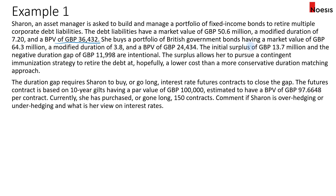There is an initial surplus of £13.7 million, which is the market value of the assets or the bonds minus the market value of the debt liabilities. The negative duration gap is calculated as the BPV of the asset minus the BPV of the liability. This surplus allows her to pursue a contingent immunization strategy to retire the debt at hopefully a lower cost than a more conservative duration matching approach.